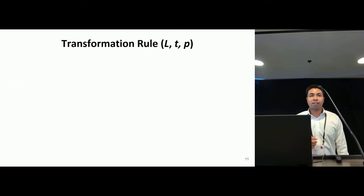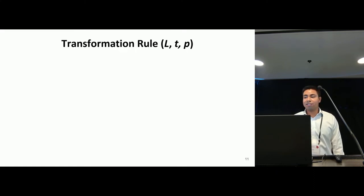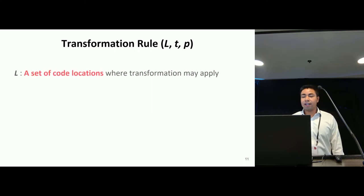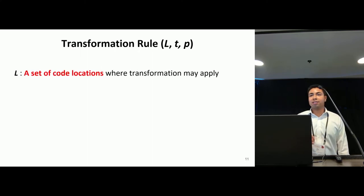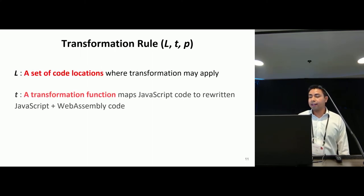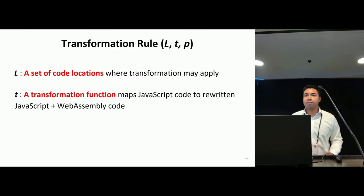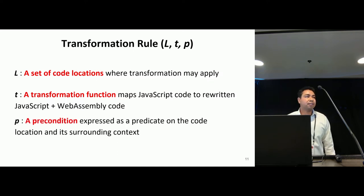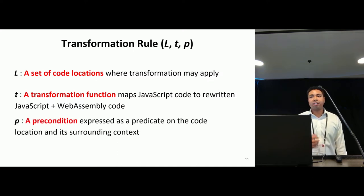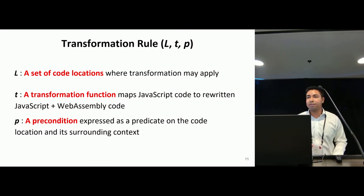The core of our approach lies in our transformation techniques, or transformation rules. Each rule consists of three parts: a set of code locations where a transformation can be applied, a transformation function that maps JavaScript code to equivalent JavaScript and WebAssembly code, and a precondition expressed as a predicate on the code location and its surrounding context to ensure that the semantics of the program remain unchanged.